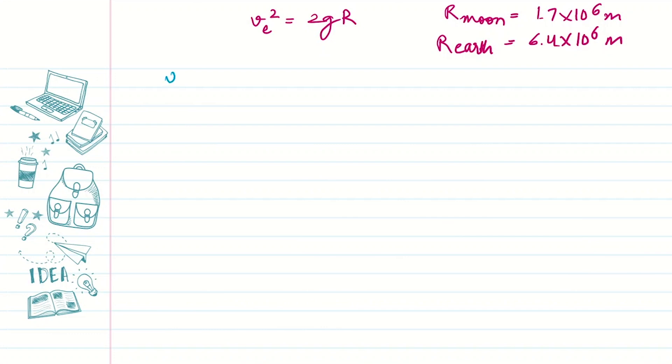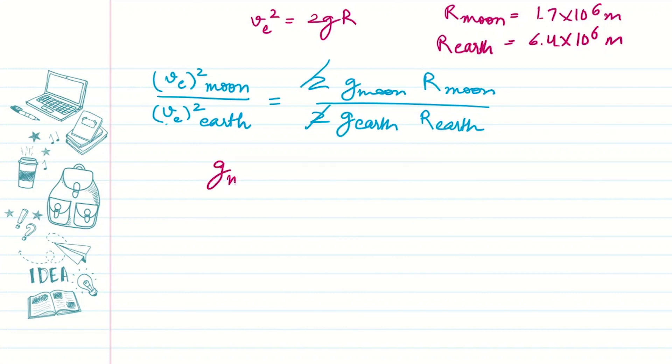We are having this information. Now let's find the ratio for Moon over Earth. So this is twice g of Moon, radius of Moon over twice g of Earth, radius of Earth. So this will cancel. We know the g of Moon is 1 sixth of g of Earth. So we can write this ratio of g of Moon over g of Earth as 1 over 6.